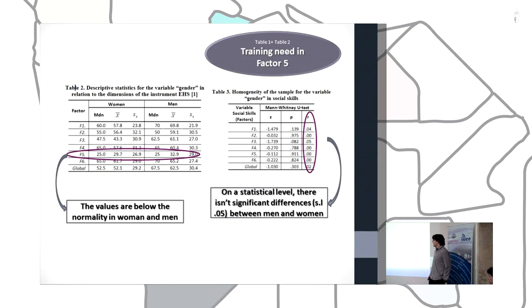The situation was given both between women and men. And we find a significant difference between the two genders on a statistical level with a significance level of 0.05. The result shows the need to train in factor 5.